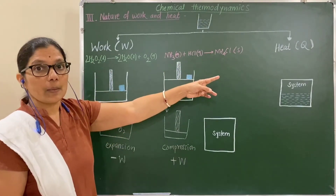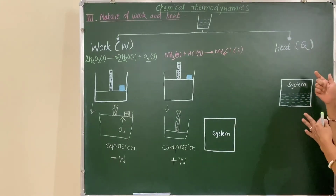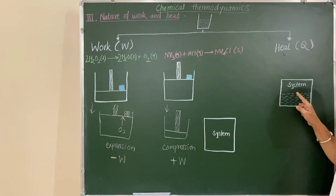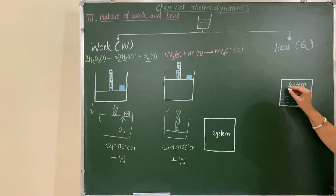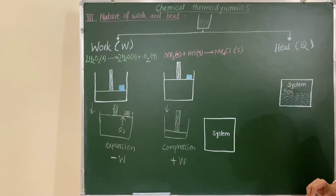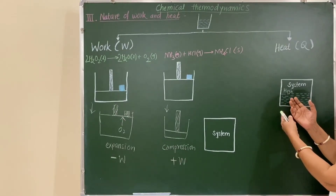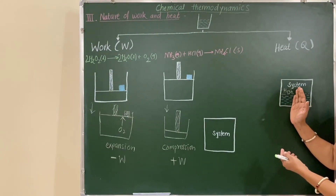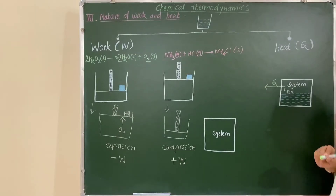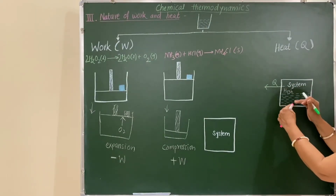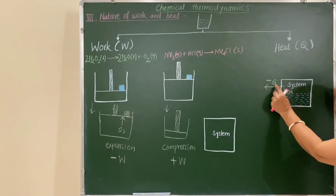Now consider another mode of energy transfer — heat. Let us see how the system exchanges its energy with the surroundings in the form of heat. This is only possible if the system and the surroundings are at different temperatures. Suppose at the start the system is at a high temperature. Then the energy of that system is given out to the surroundings in the form of heat — the temperature of the system decreases, so energy decreases, meaning minus Q.